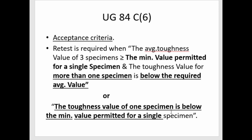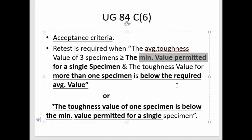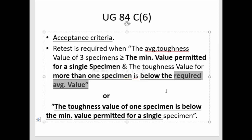This is what the code tells us — it is quite confusing and complicated. In order to make it simpler, we need to look at two terms: the first is the minimum value permitted, and the second is the required average value.